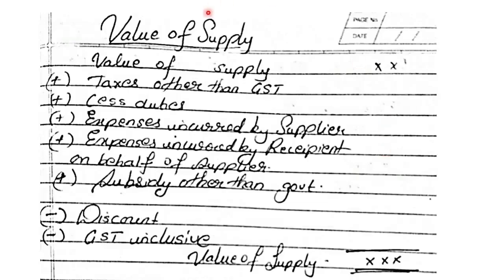In order to calculate the value of supply, the very first thing you need to note down is the value of supplied goods or services — that is the original value of your product. To that we need to add all taxes other than GST, add all cesses and duties, add all expenses incurred by the supplier, add all expenses incurred by the recipient on behalf of the supplier, and add all subsidies other than government subsidy — government subsidies are exempted, other than that they will be added to the value of supply.